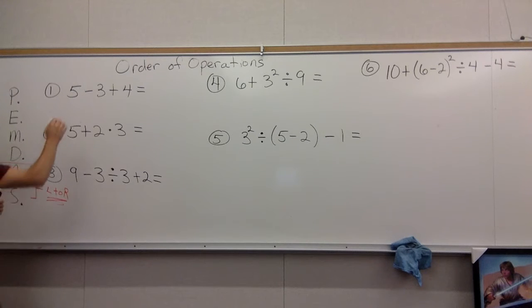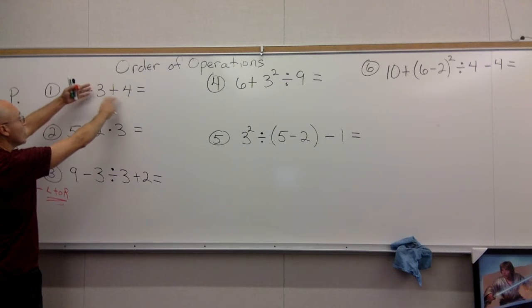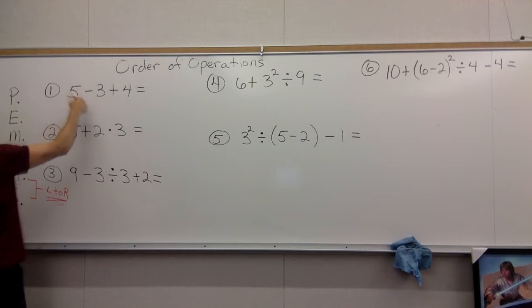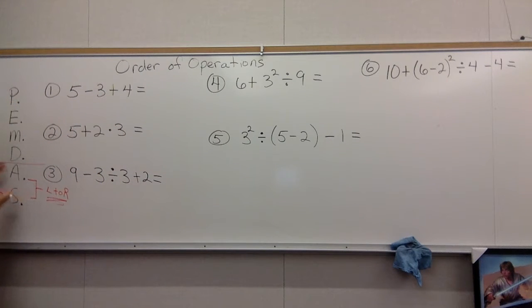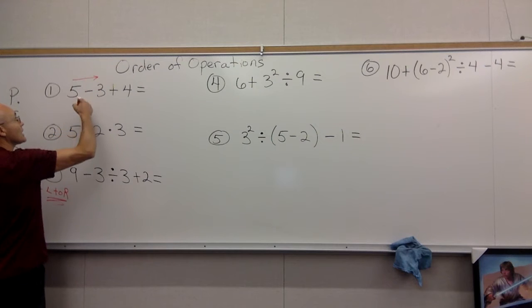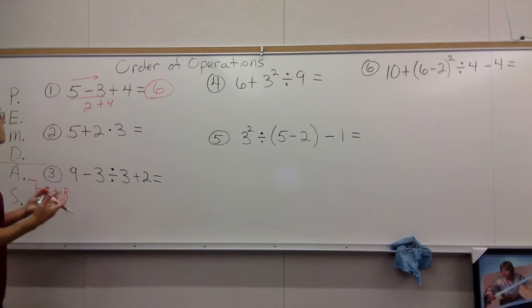You should not be adding right here because if you add 3 + 4 you're gonna get the problem wrong. When you got subtraction and addition and you have to decide, understand that these guys are equal in importance, so just go straight left to right. So 5 - 3 is 2, and 2 + 4 gives you the answer of 6.